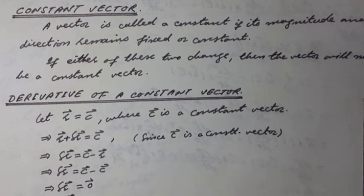Derivative of a constant vector. Let R vector is equal to C vector, where C vector is a constant vector.